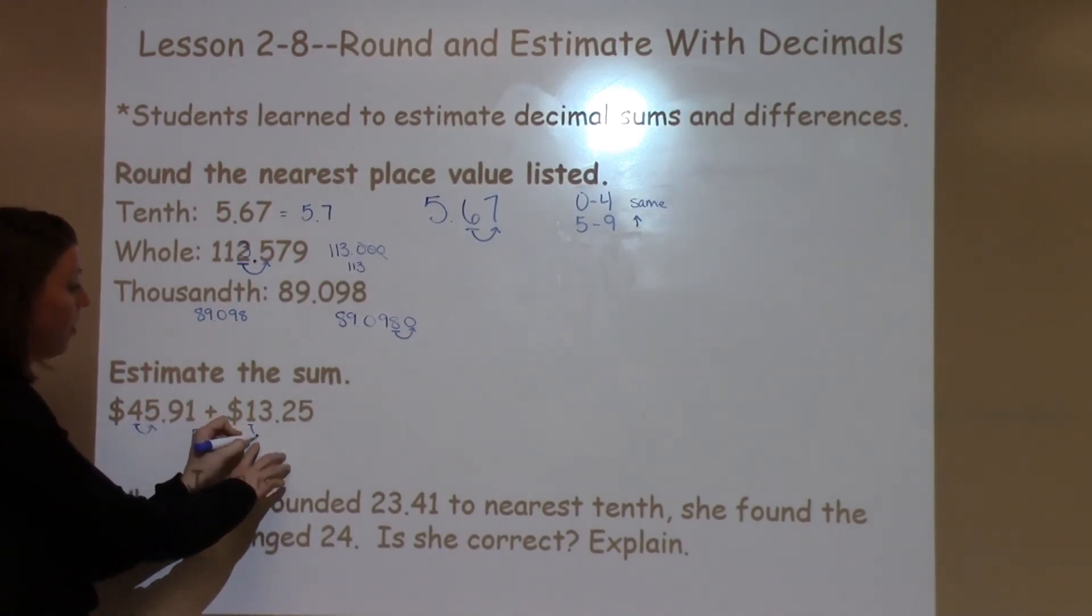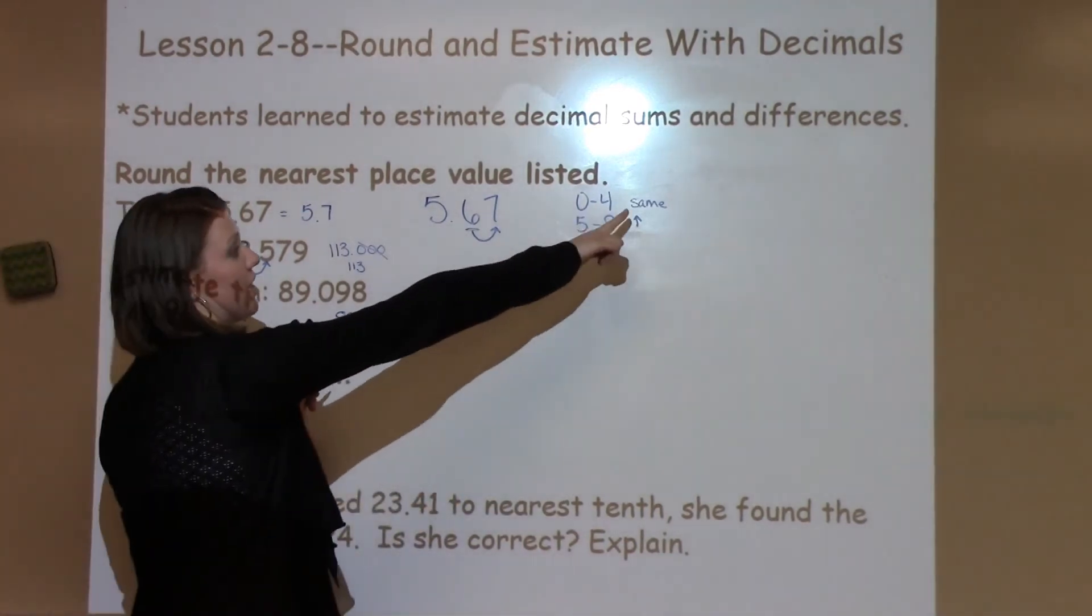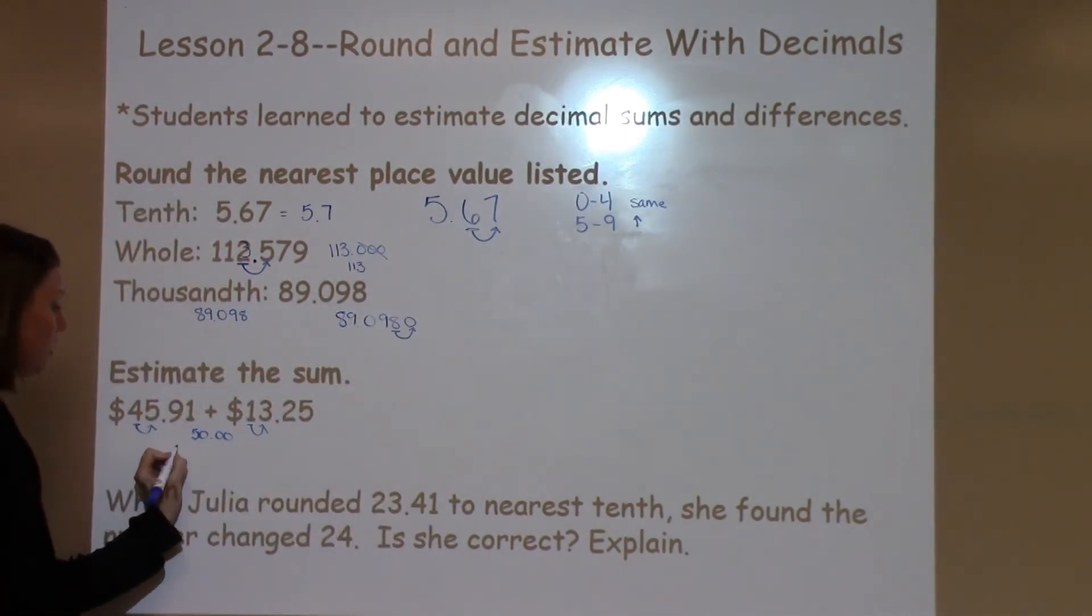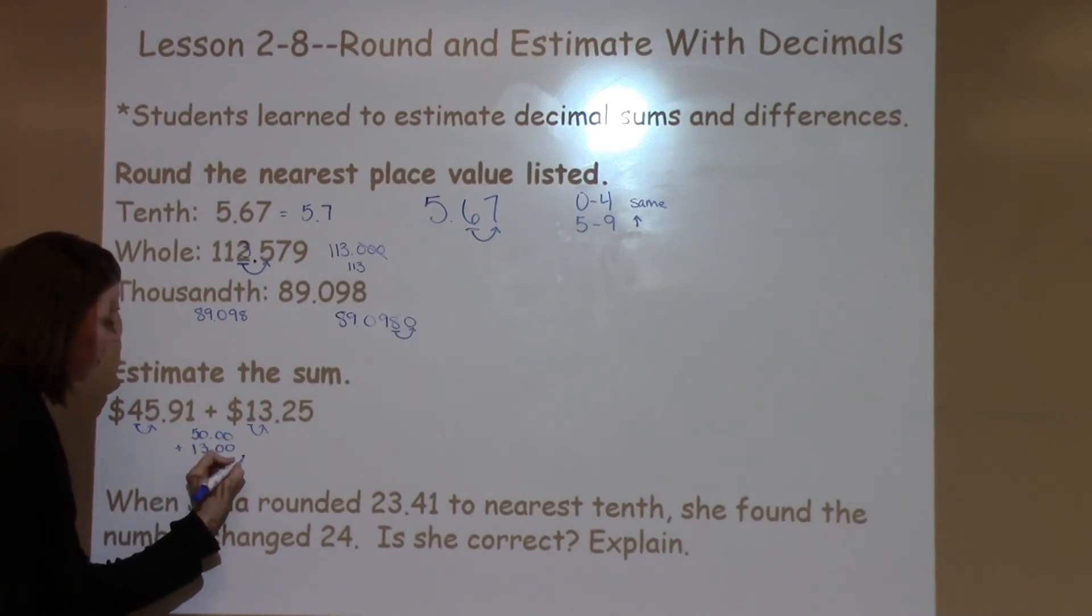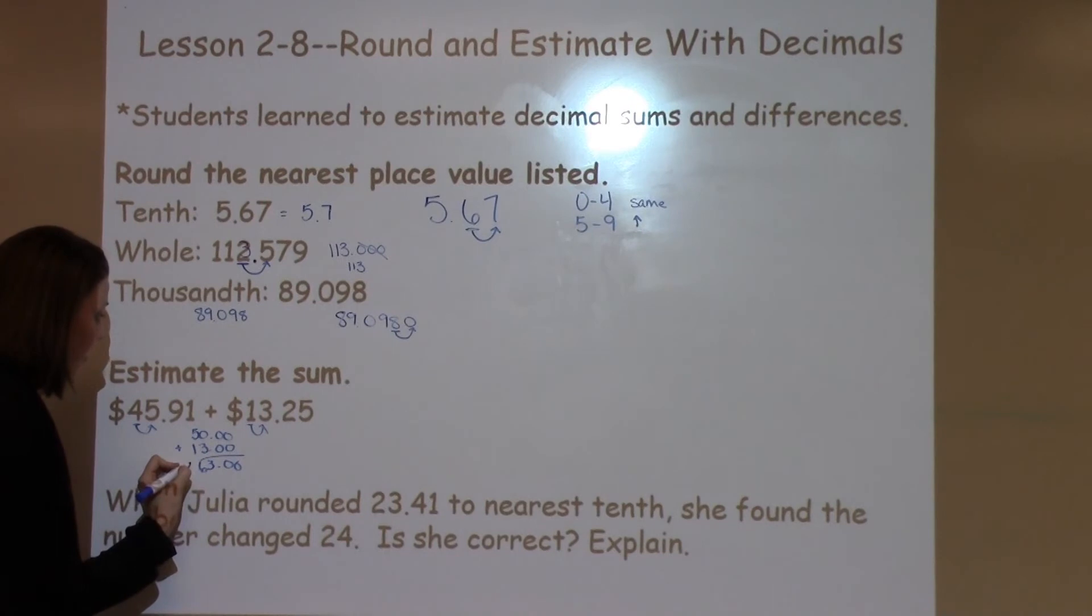I'm also going to look at my 1. I've got a 3 next door, which tells me it's going to stay the same. So I'm going to add 13. When I add these two numbers together, I've got $63.